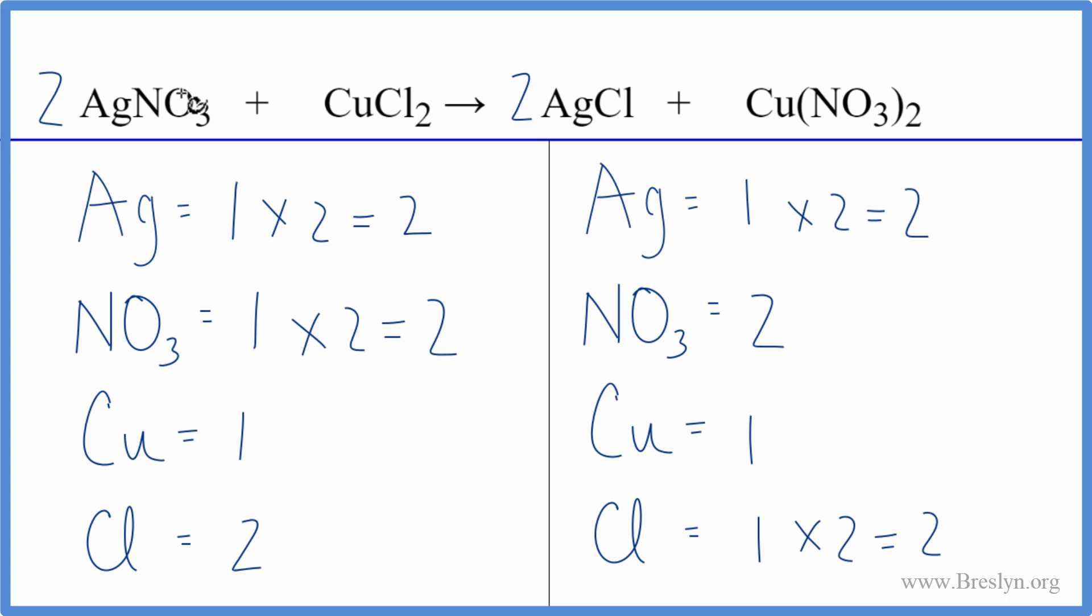So by counting this nitrate here as one item, because it stays together in the chemical reaction, that makes the balancing a lot easier. This is Dr. B with the balanced equation for AgNO3 plus CuCl2. Thanks for watching.